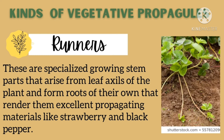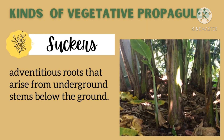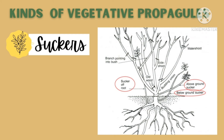Now let's proceed to the kinds of vegetative propagules. First is runners — these are specialized growing stem parts that arise from leaf axils of the plant and form roots of their own, making them excellent propagating materials, like strawberry and black pepper. Next is suckers — suckers are adventitious roots that arise from underground stems below the ground.